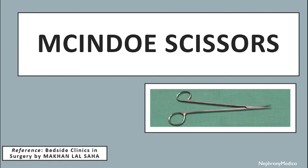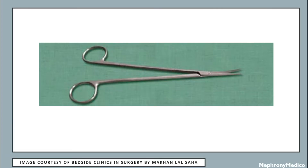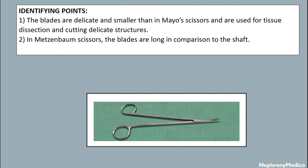Hello and welcome. Let's talk about Mackendo scissors. This is a picture showing Mackendo scissors identifying points. The blades are delicate and smaller than in Metzenbaum scissors. Mackendo scissors are used for dissection and cutting delicate structures.